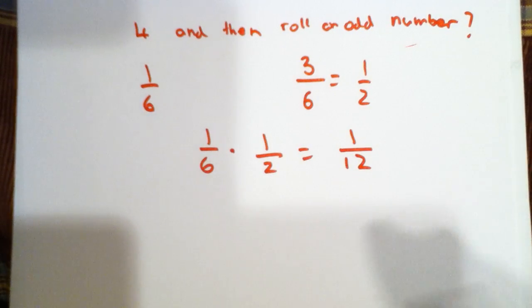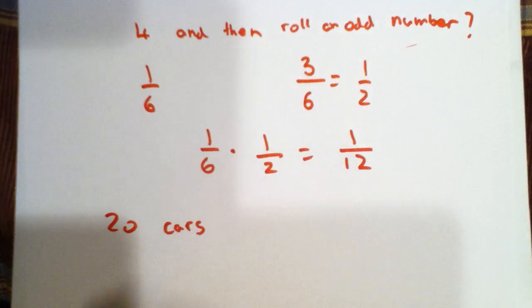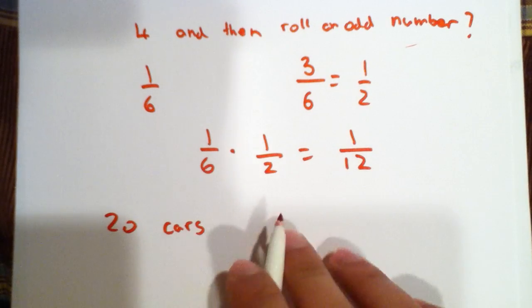So you have 20 cars in a parking lot. And out of those 20 cars, 5 of them have dents.